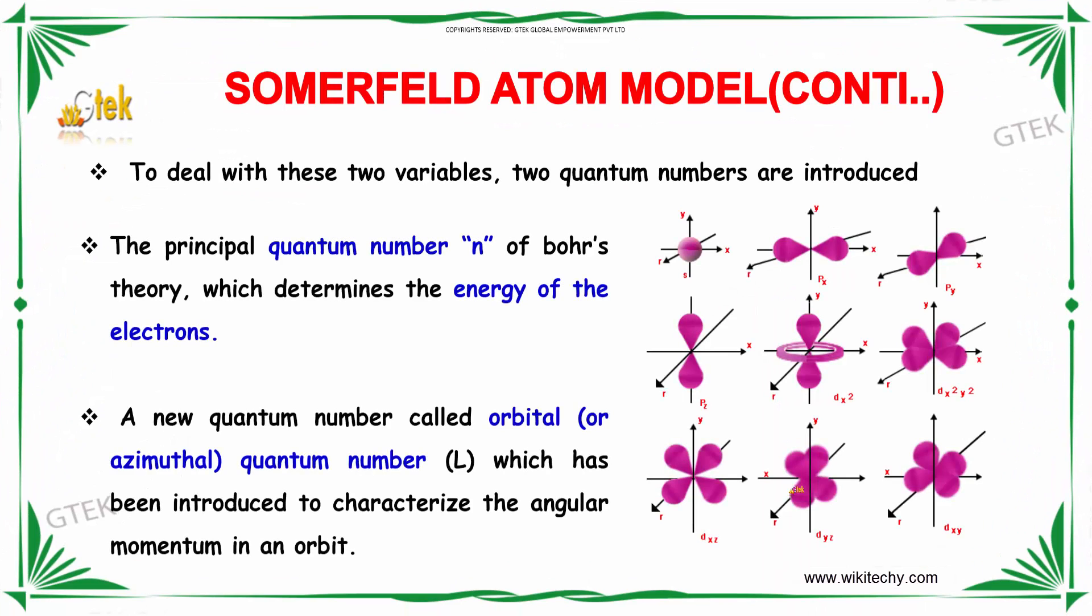To deal with these two variables, two quantum numbers are introduced: the quantum number n of Bohr's theory and the orbital quantum number. The principal quantum number n of Bohr's theory determines the energy of the electron.